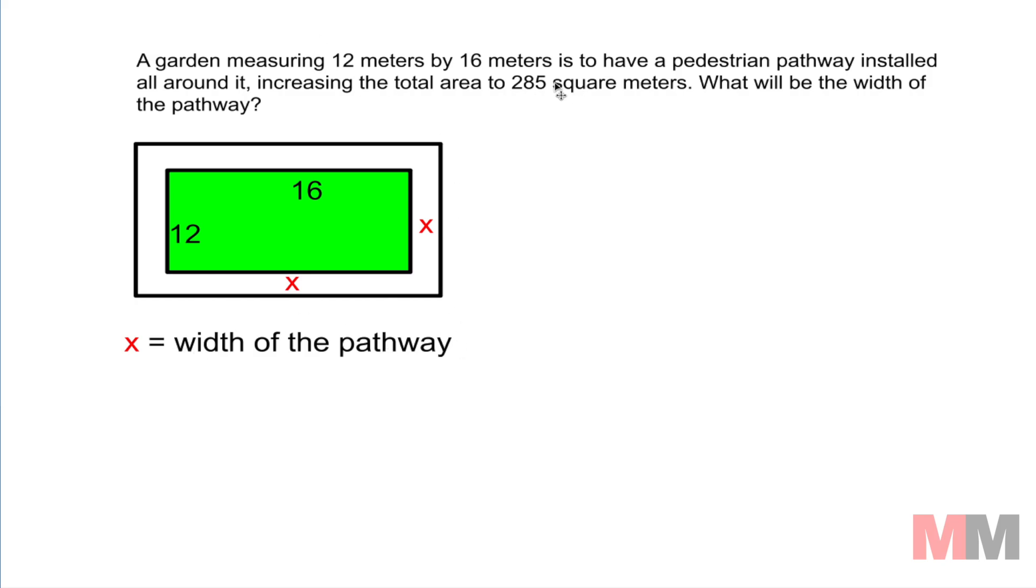So x represents the width of the pathway. They also give us another important information right here saying that the overall area is 285 square meters. Seeing that this is a rectangle, to find the area of a rectangle, you just do length times width to get the area.